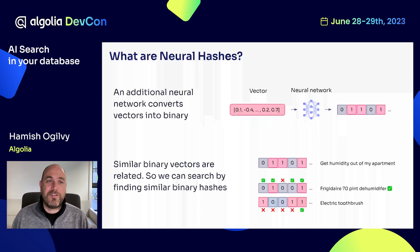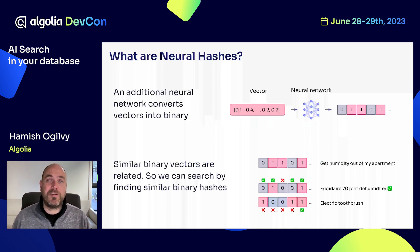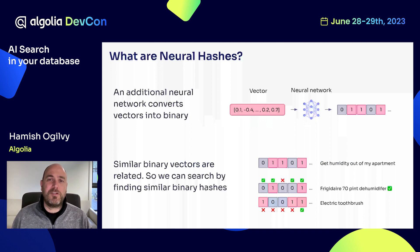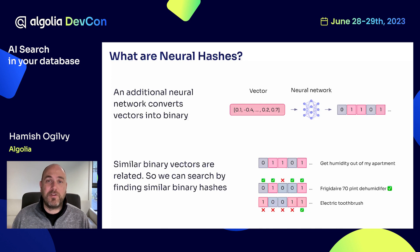If you want to see how neural hashes work: essentially, you're taking the vector representations and passing them through another neural network which outputs binary. These ones and zeros — think of it as a binary vector. When we're doing searching, we're trying to find how many of the ones and zeros overlap between the query and the items you're searching. In this case, the Frigidaire product is closer to the query than the electric toothbrush, which is again what we'd expect to see.